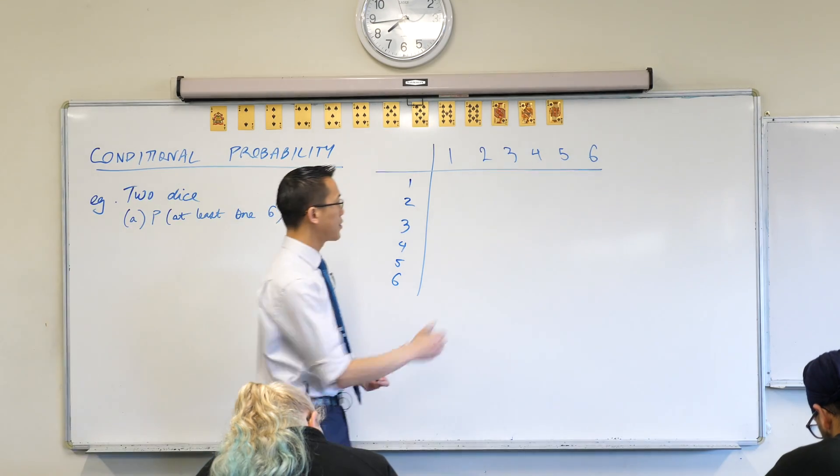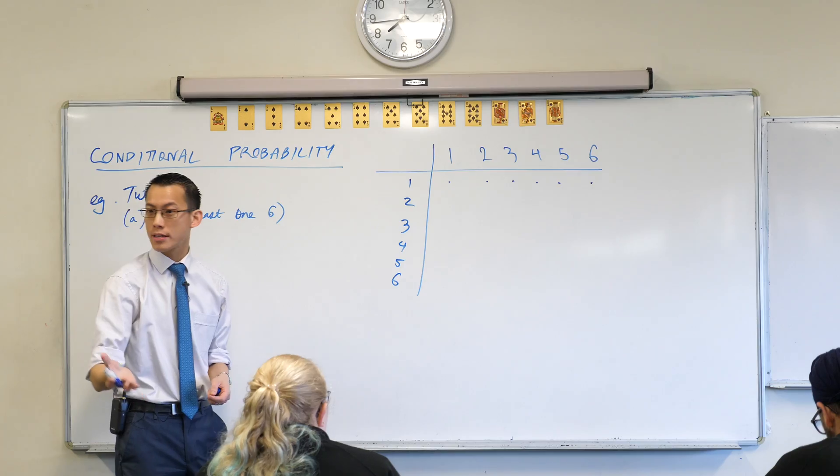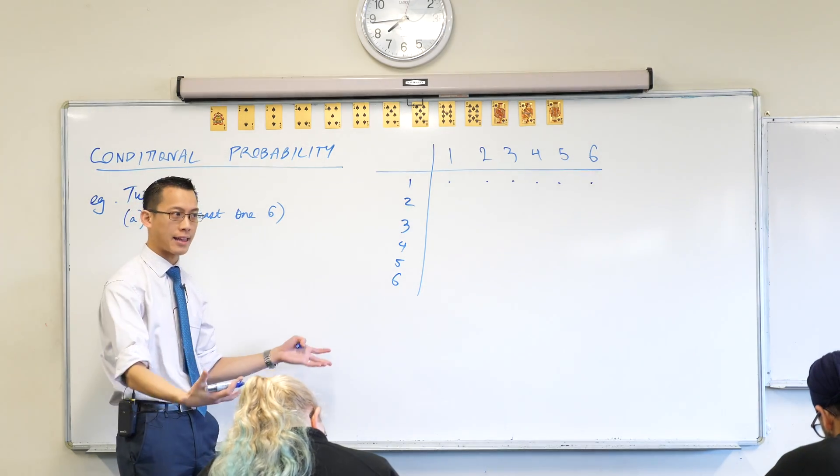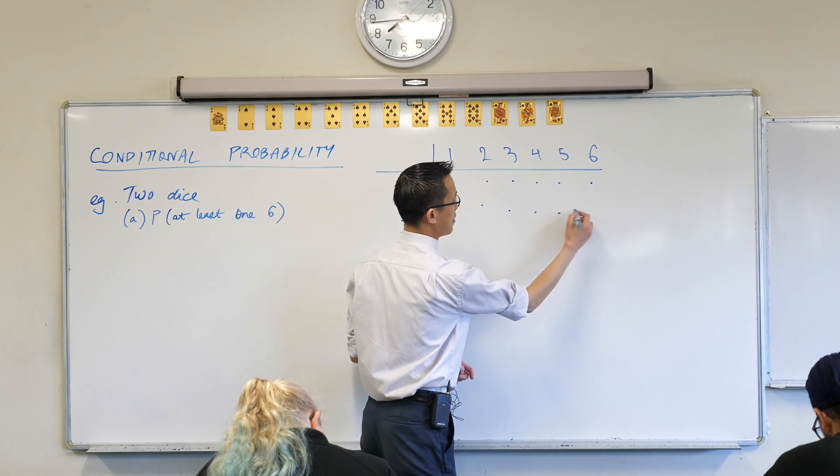In the past you might have called an array a dot diagram if you remember that from stage five. So I'm going to put some dots here, each one of which represents an event that is equally likely to happen because we're just assuming they're fair dice. Go ahead, get this array down with me.